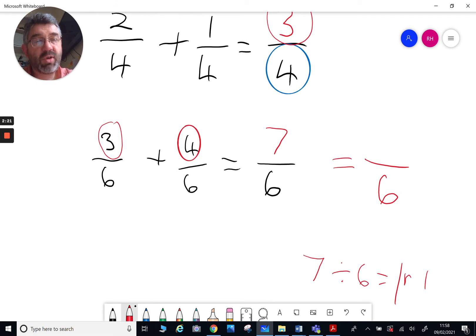But then we would have one whole one left over. We'd have one whole one here, the one left over, the remainder becomes one sixth.